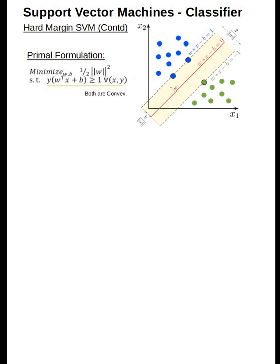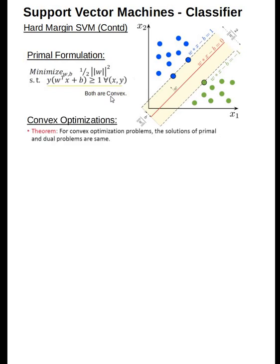One of the things we should know is that both the objective function and the constraint are convex in nature. That convexity gives us certain principles from the convex optimization space. The key theorem for us is: for convex optimization problems, the solutions of the primal formulation is the same as the dual formulation problem which we will be seeing today.